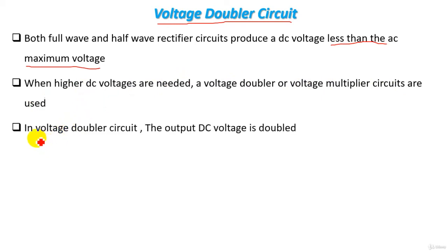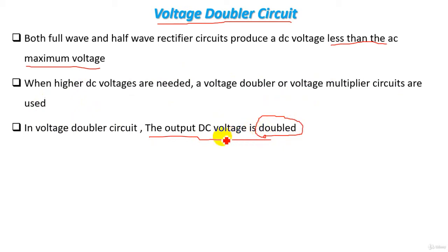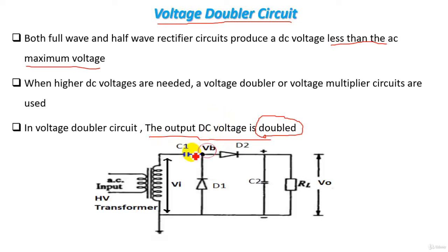In the voltage doubler circuit or voltage multiplier circuit, the output DC voltage is doubled, and this is the main advantage of this circuit — we can produce a doubled high voltage DC. The voltage doubler circuit consists first of a high voltage transformer to produce high voltage AC, and the secondary voltage of the transformer is the input voltage to our rectification circuit or voltage doubler circuit.